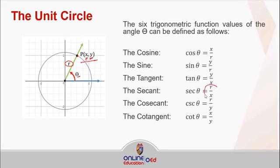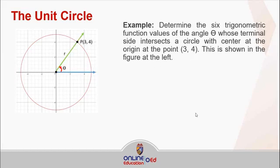For example, if you want to determine the 6 trigonometric function values of the angle theta whose terminal side — the green ray — intersects the circle with center at the origin at the point (3, 4), so at this point this ray intersects this circle with radius r.